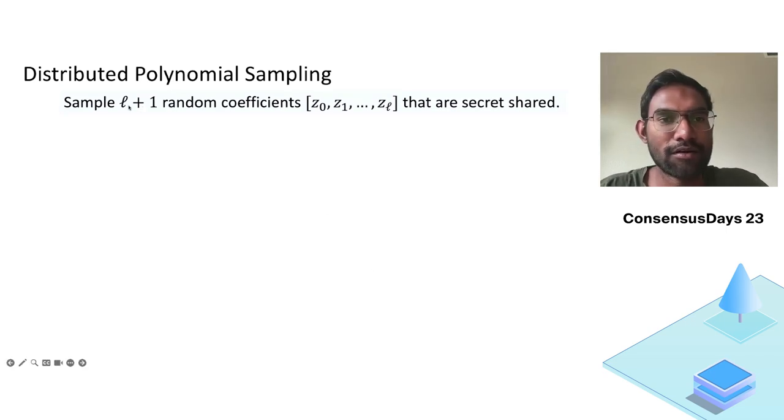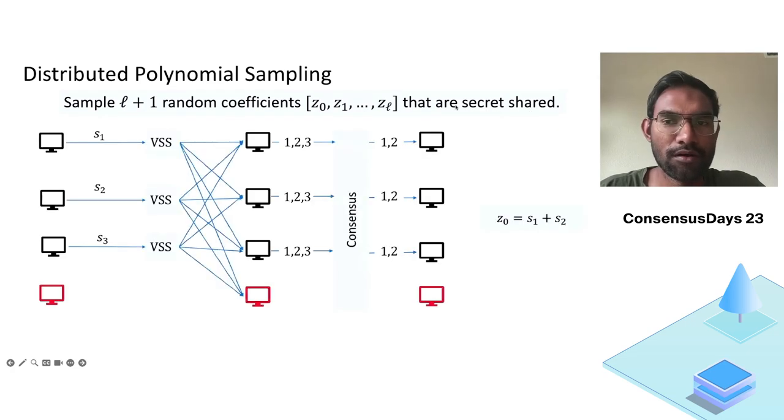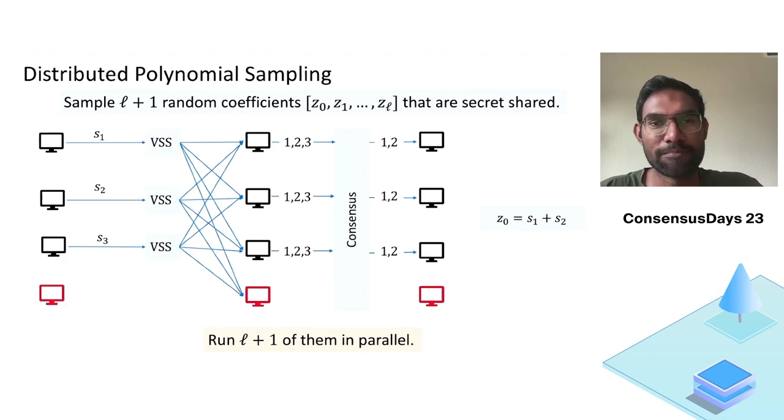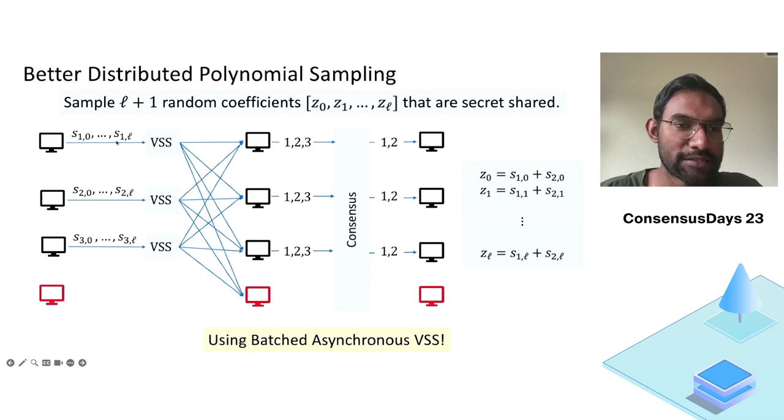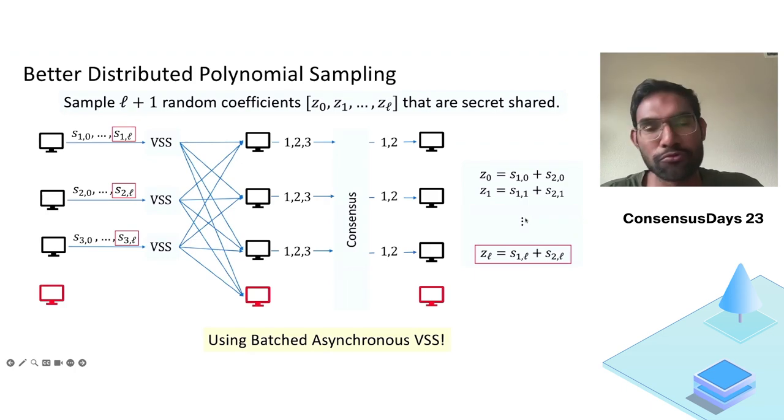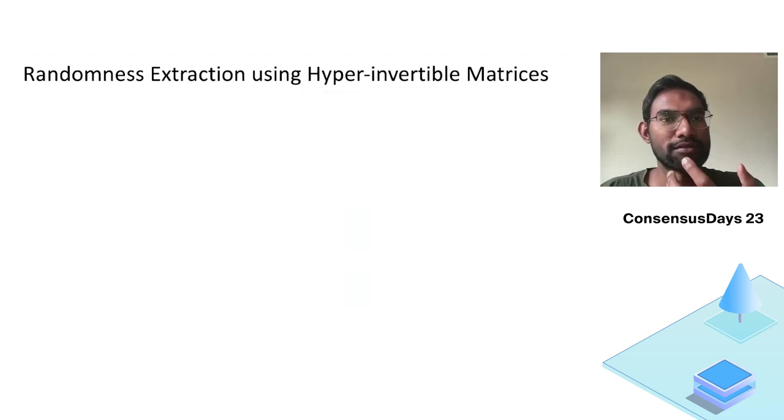Look, we want to sample a polynomial that's secret shared. So one way to do that is to sample l+1 random coefficients z0 to zl that are secret shared. How do I sample random coefficients? I already know how to sample a secret random value. Let's just use that framework to sample one coefficient z0. I can run l+1 of them in parallel and generate l+1 random coefficients that will be secret shared. But this is definitely expensive. We can also use some batched idea where each party shares a batch of secrets and we can define the corresponding coefficients using those secrets. But we can do much better. We do much better using randomness extraction by using hyper-invertible matrices. This is a general trick that you probably want to know and use elsewhere as well.